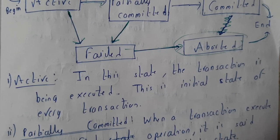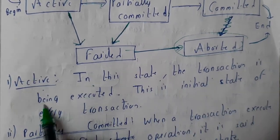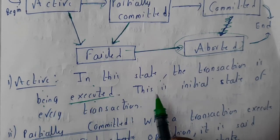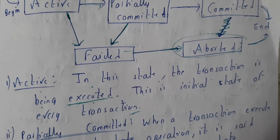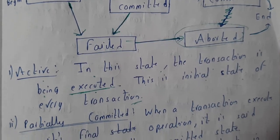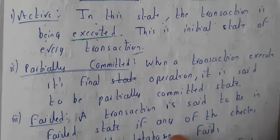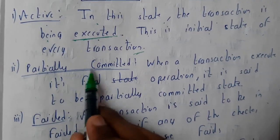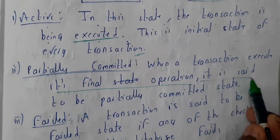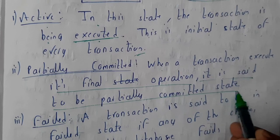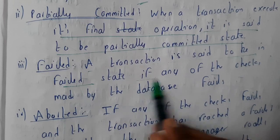Now let us go through the definitions of individual states. Active: in this state the transaction is being executed. It is the initial state of every transaction — every transaction starts and enters some other position. Partially committed: when a transaction executes its final operation, it is said to be partially committed.